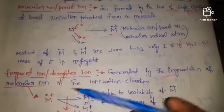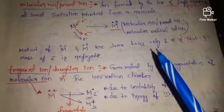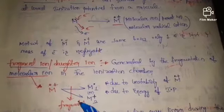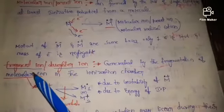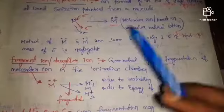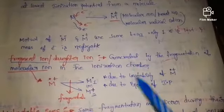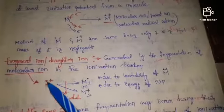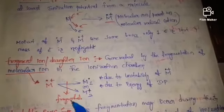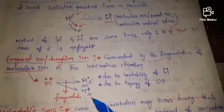Next: fragment ion or daughter ion. This is the continuation, because the radical is highly unstable, so fragmentation will occur. This fragment ion or daughter ion is generated by the fragmentation of the molecular ion in the ionization chamber. The radical cation is highly unstable, so fragmentation occurs, and the fragment ions are formed.